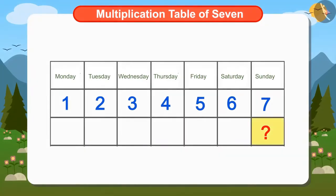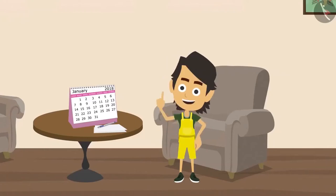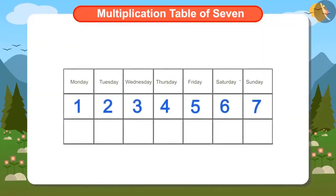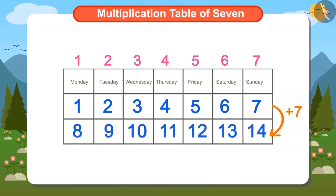Can you help Ayushman get the answer? Ayushman knows that there are 7 days in a week. So if 7 is added to today's date, the 7th, then next Sunday's date will be easily known. If we add 7 to date 7th, the answer will be 14. Ayushman has found out that next Sunday the date will be 14th.